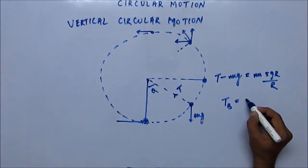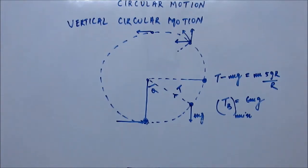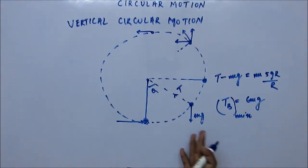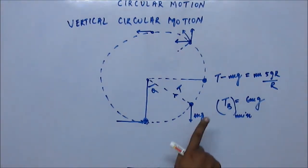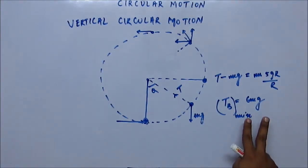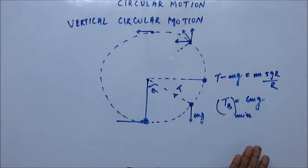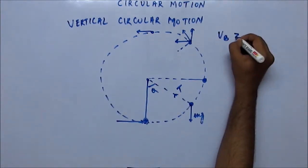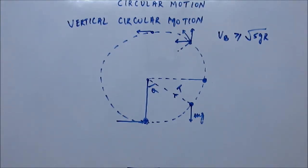The tension at the bottom for this case comes out as 6mg. This is the minimum value of tension at the bottom. If a breaking strength is given, you can check whether the string will be able to survive the circular path, because the minimum tension generated for circular motion will be 6mg. If this tension value cannot be achieved, it is impossible for the bob to go round in a vertical circular path. So if velocity at the bottom is greater than or equal to √(5gR), the bob will complete the vertical circular motion.